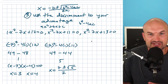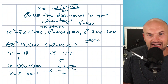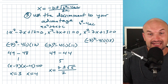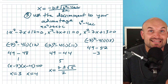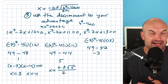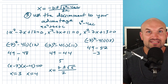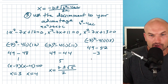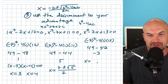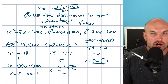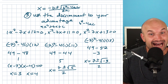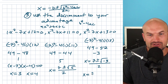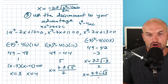In the last example, negative 7 squared minus 4 times 1 times 13 gives 49 minus 52, which equals negative 3. A negative discriminant means you'll have two complex roots — not something you'll want to factor. Finishing with the quadratic formula gives x equals 7 plus or minus the square root of negative 3, all divided by 2. Simplifying the square root of negative 3 as i square root of 3, the final answer is x equals 7 plus or minus i square root of 3, all over 2.